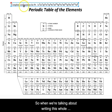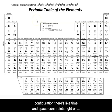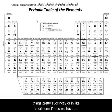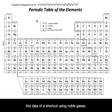When we're talking about writing this whole configuration, there are time and space constraints. Our periodic table is pretty small — we need to be able to express things pretty succinctly, in short terms. So chemists have developed this idea of a shortcut using noble gases.